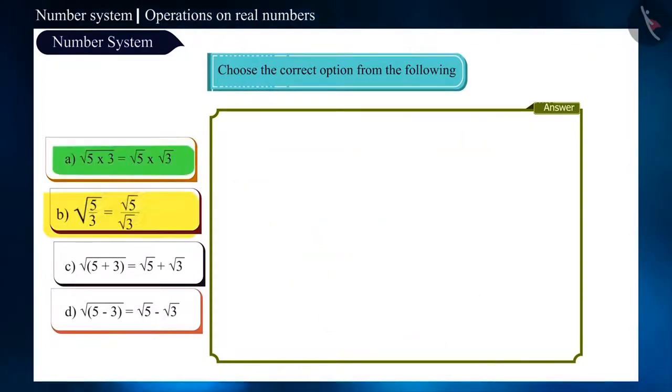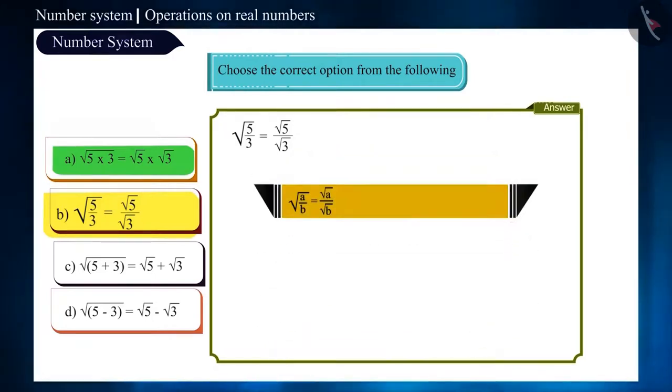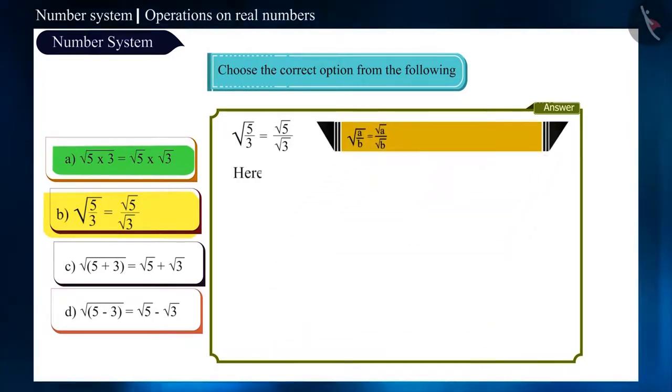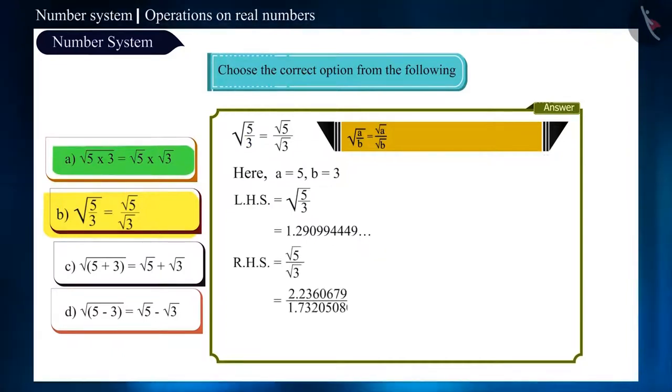Now look at option B. Here, we will use this rule root of A by B is equal to root of A by root of B. Here, A is equal to 5 and B is equal to 3.